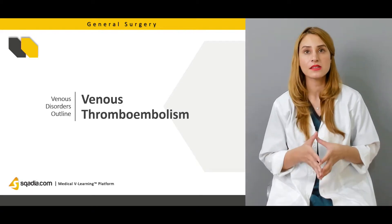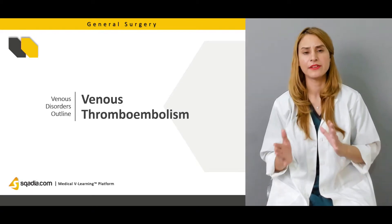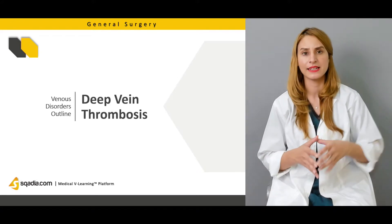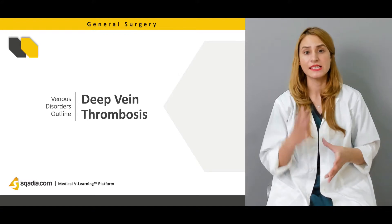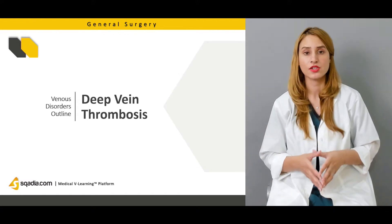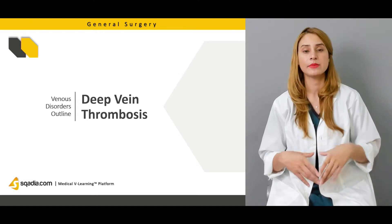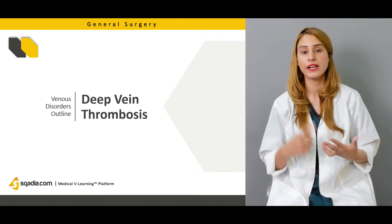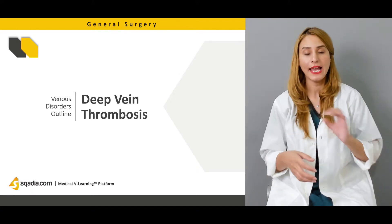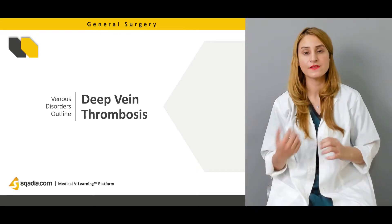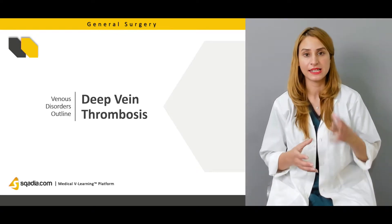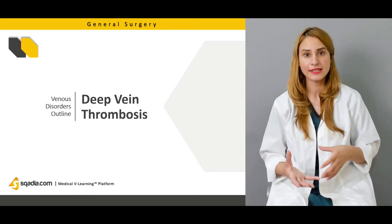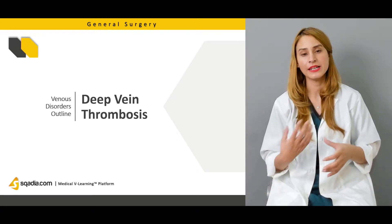In deep vein thrombosis there is Virchow's triad, which includes hypercoagulability, stasis, and endothelial dysfunction. Endothelial dysfunction can be caused by trauma, surgery, smoking, and hypertension.